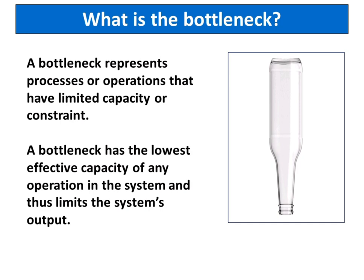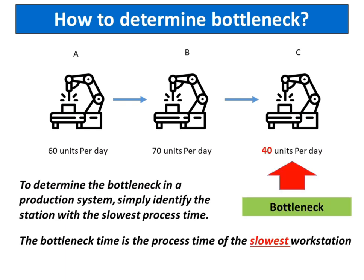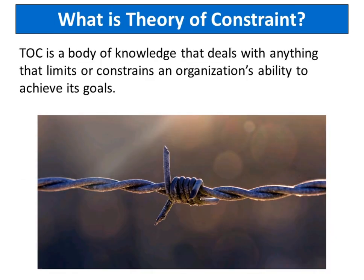A bottleneck has the lowest effective capacity of any operation in the system and thus limits the system's output. To determine the bottleneck in a production system, simply identify the station with the slowest process time. The bottleneck time is the process time of the slowest workstation. In this case, process C is the bottleneck, as it is the slowest workstation.